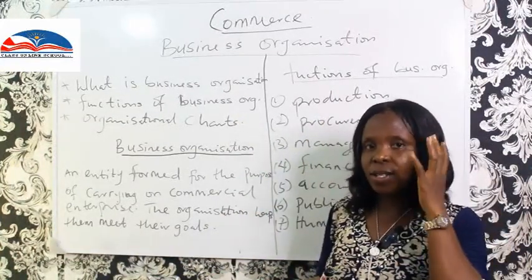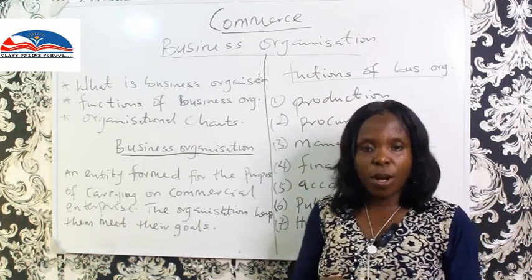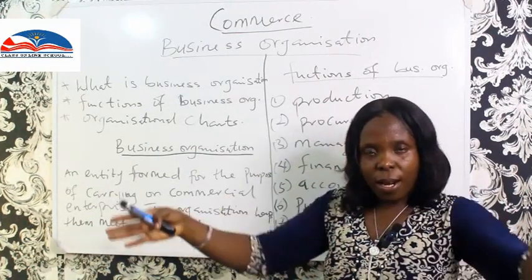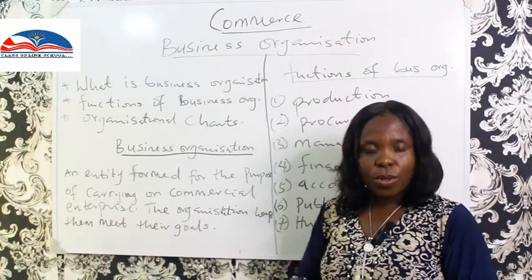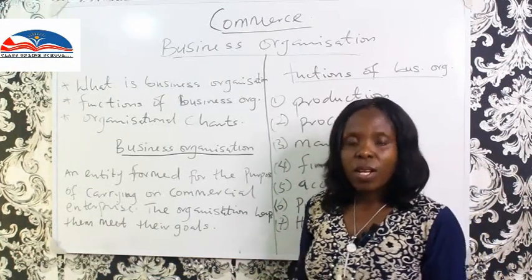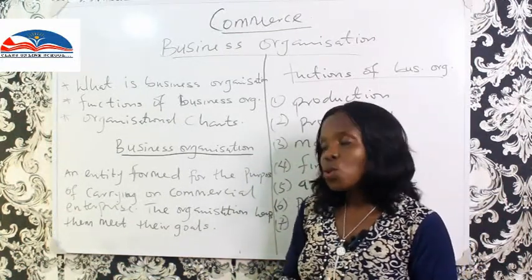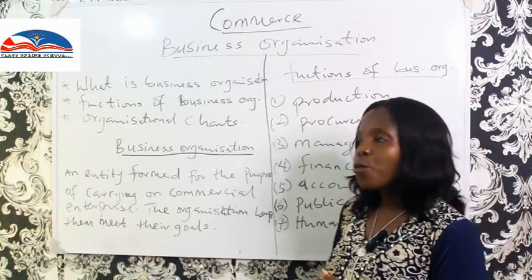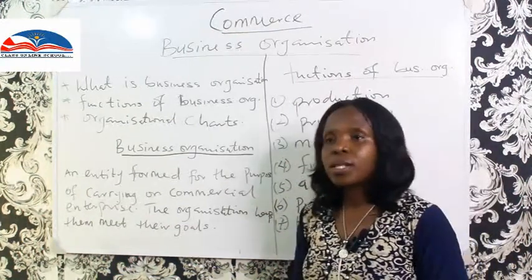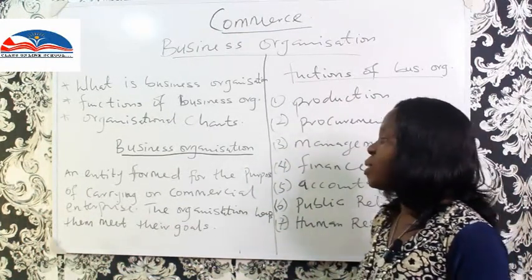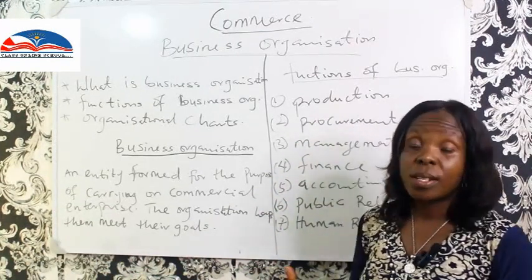A business organization is an entity — an organization comprises a group of people, but when it becomes a business it means an entity registered, that is legal, that has come into place to carry out business activity. So it's an entity formed for the purpose of carrying out commercial activities, and this helps the organization to meet their goals.